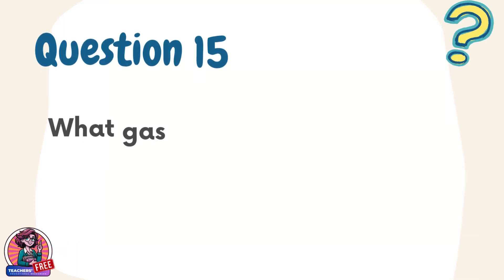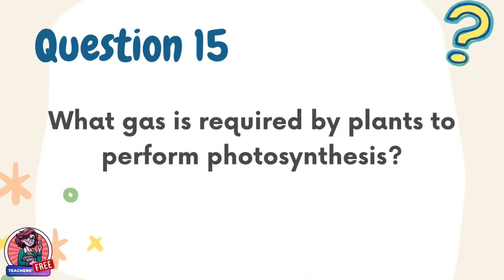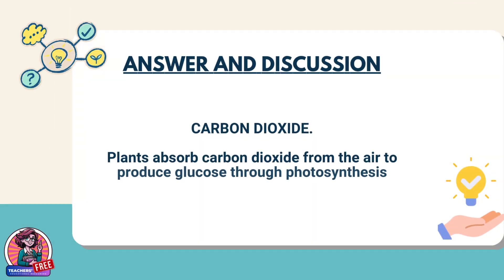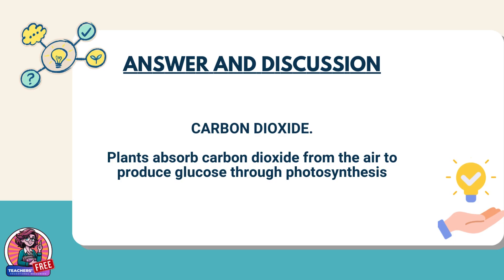Question 15. What gas is required by plants to perform photosynthesis? Answer: Carbon dioxide. Plants absorb carbon dioxide from the air to produce glucose through photosynthesis.